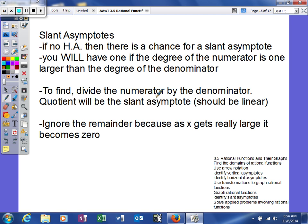To find it, we're going to divide the numerator by the denominator. The quotient will be the slant asymptote, which should be linear, and then we're going to ignore the remainder because as x gets really large, that fraction represented by your remainder will basically turn into zero, so it's kind of irrelevant to us.